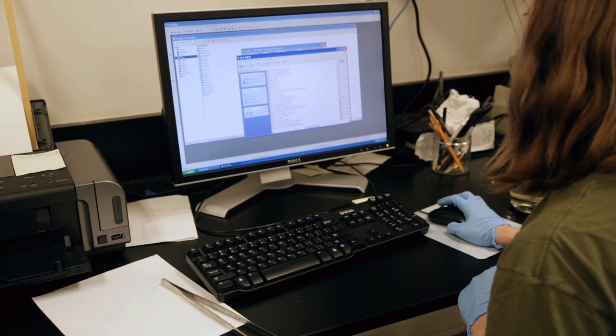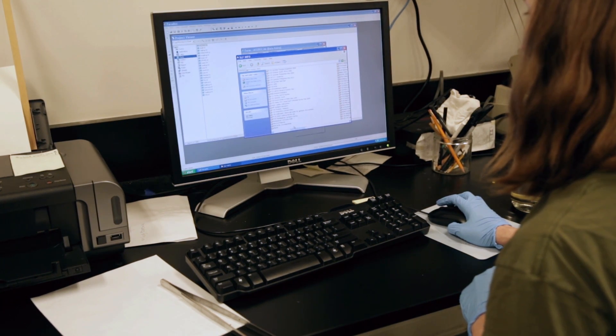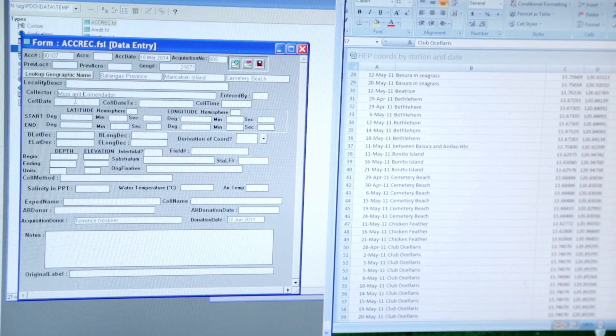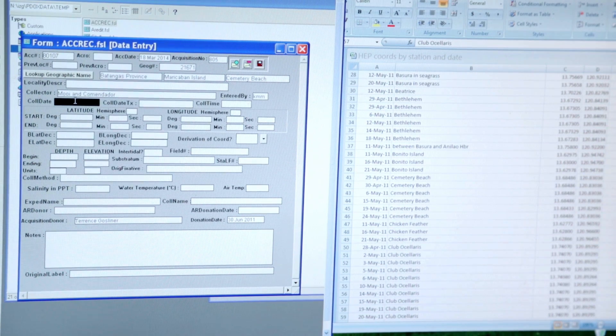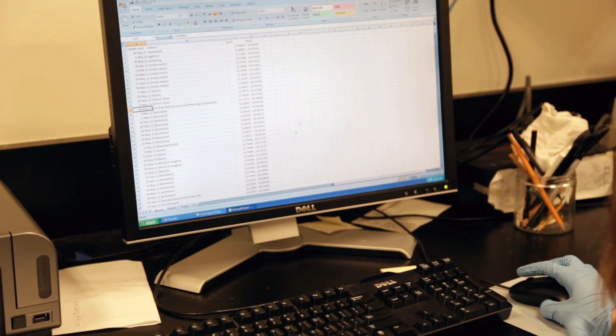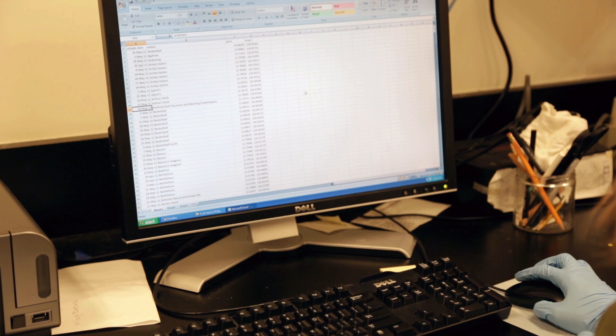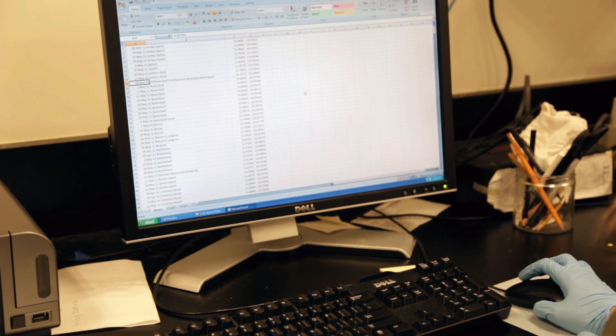You can enter data about a specimen under its catalog number, what you think it is, where it was found, and so on, and then you'll be able to search that database and retrieve all of the information you have in the entire collection that's been cataloged.